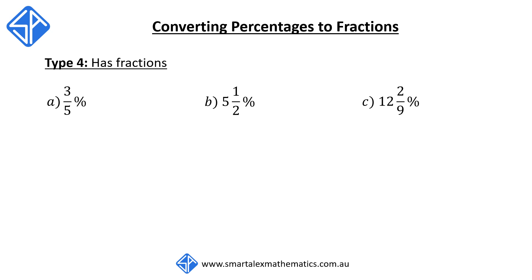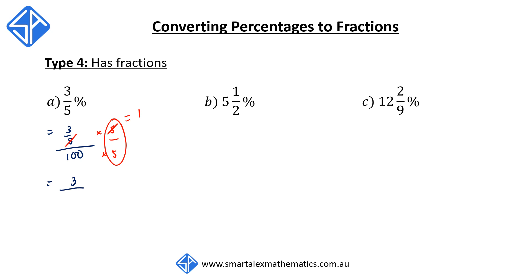Our last type is probably the most confusing for many students because this time our percentages also have fractions in them. Nevertheless, the strategies are the same. Question A: 3 fifths percent. We write this as 3 fifths out of 100. We multiply top and bottom by 5 to eliminate the denominator — the 5s cancel out, giving us 3 on top and 100 times 5, which is 500, on the bottom. Therefore, 3 fifths percent is equal to 3 out of 500.